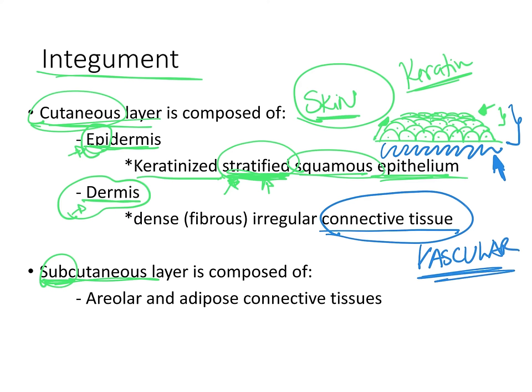Since our skin needs to resist tensile forces in all different directions — it can be stretched in many directions — the connective tissue making up the dermis is irregularly arranged. So in the dermis we find dense irregular connective tissue. In a very small part of the dermis we also find loose areolar connective tissue, but the key point is that the dermis is primarily dense irregular connective tissue.